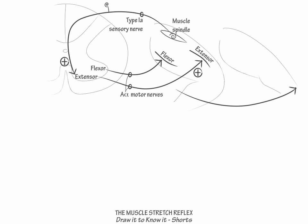If the flexor muscles were simultaneously activated, the thigh would only stiffen and not move. So now draw a Renshaw cell, an interneuron, in the anterior horn of the gray matter of the spinal cord, and show that when the Renshaw cell is activated, it inhibits the flexor motor neuron using the inhibitory neurotransmitter glycine.